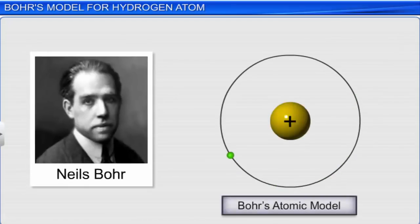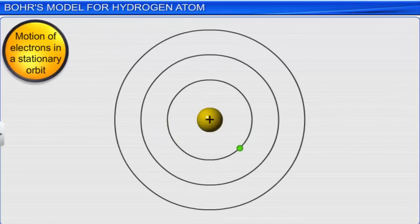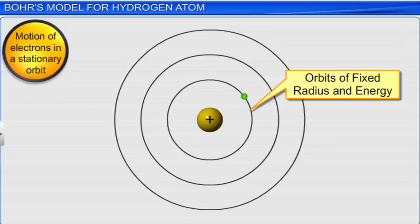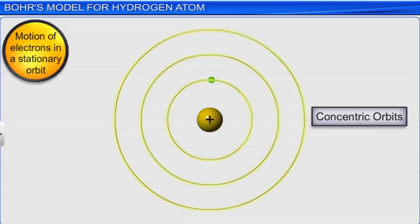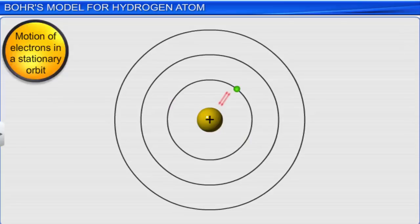In 1913, Niels Bohr proposed an atomic model that quantitatively explained the features of the structure of hydrogen atom and its spectrum. The postulates describe the motion of electrons in a stationary orbit, fixed energy of electrons, energy change during transition of electrons, and fixed angular momentum of electrons. The first postulate states that the electron in the hydrogen atom can move around the nucleus in circular paths of fixed radius and energy, called orbits. Orbits are arranged concentrically around the nucleus and are also called stationary states or allowed energy states. Electrons are held by the nucleus in orbits by a strong electrostatic force.